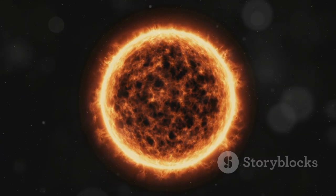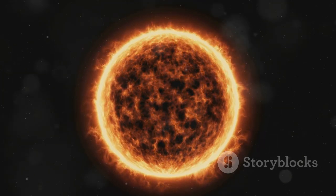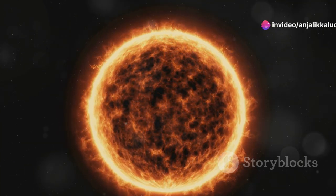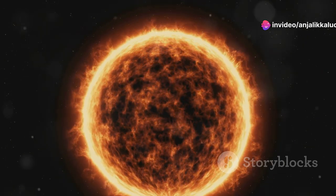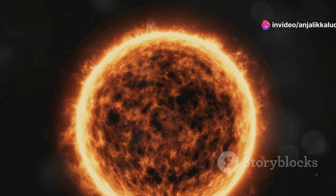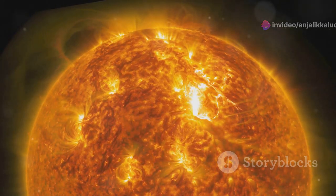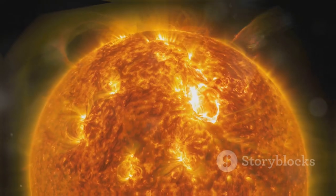Eventually, the core of the protostar reaches a critical temperature of about 10 million degrees Celsius. At this temperature, the hydrogen atoms in the core have enough energy to overcome their natural repulsion and fuse together, releasing a tremendous amount of energy in the process. This process, known as nuclear fusion, marks the birth of a star.